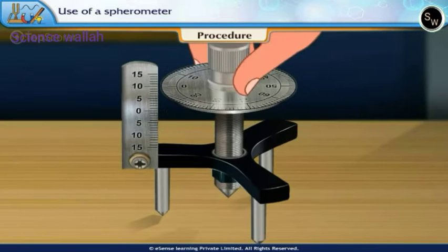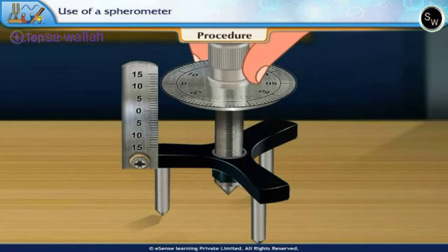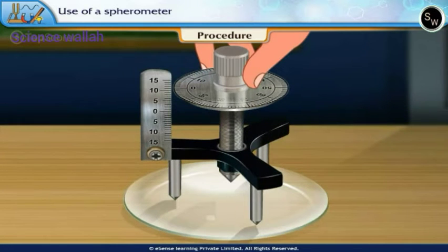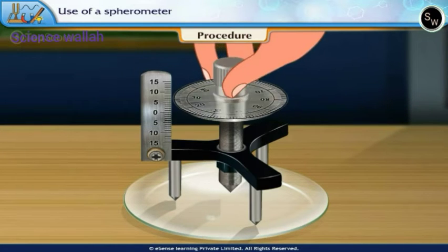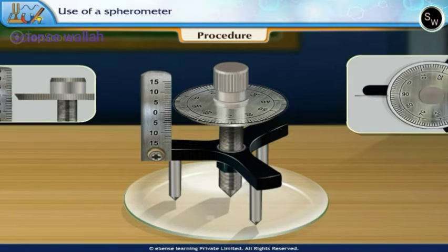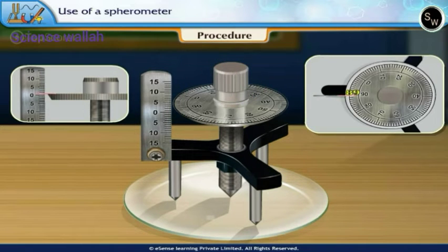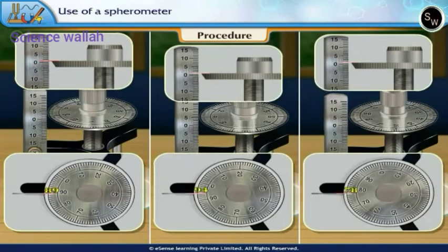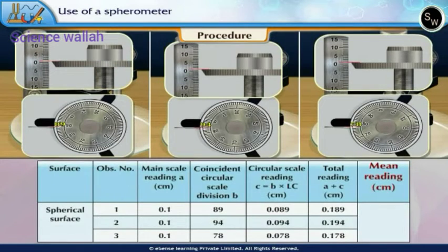Now, raise the screw and place the spherometer on the given spherical surface. Lower the screw till its tip just touches the curved surface. The spherometer should not wobble on any 3 tips. Take 3 readings. Find the mean of 3 readings Y for the curved surface.